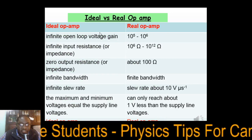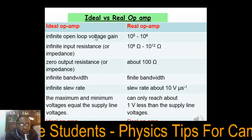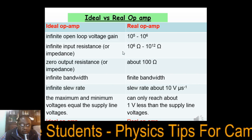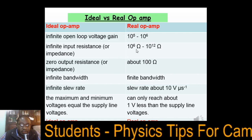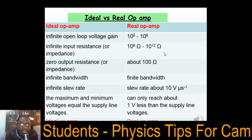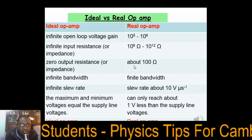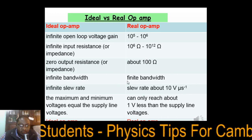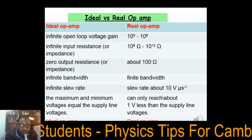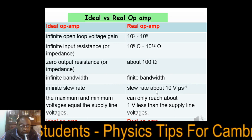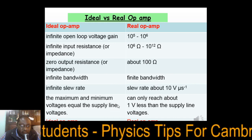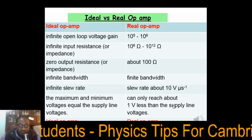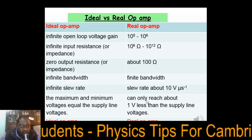Comparing the ideal operational amplifier versus a real one: infinite open loop voltage gain is between 10⁵ and 10⁶ in reality. Infinite input resistance becomes 10⁶ to 10¹² ohms in reality, which is high enough. Zero output resistance becomes about 100 ohms in the real amplifier. Infinite bandwidth becomes a finite bandwidth. Infinite slew rate becomes about 10 volts per microsecond. The maximum and minimum output voltage equals the supply voltage less approximately one volt.